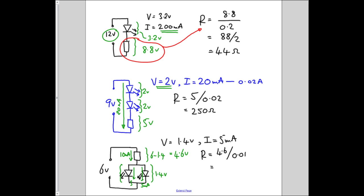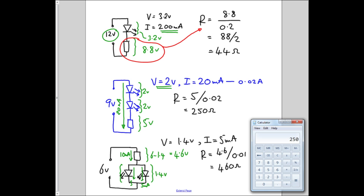Which is 46 over 0.1, which is 460 over 1. So that's 460 ohms. Let's just check that out. 4.6 divided by 0.01, 460 ohms.